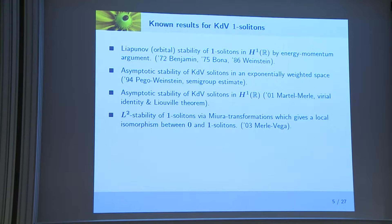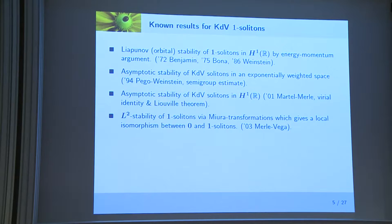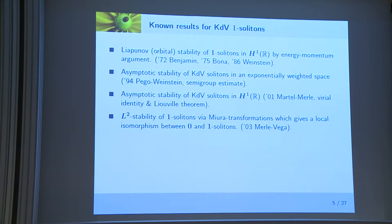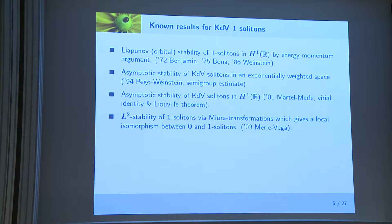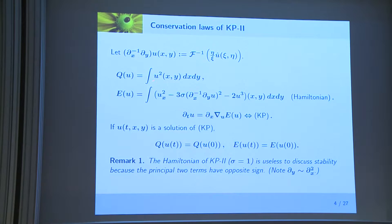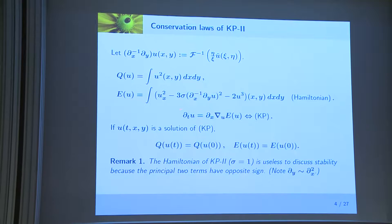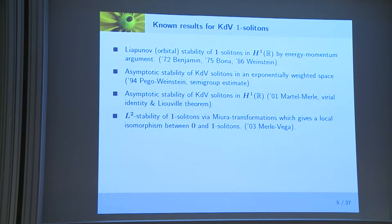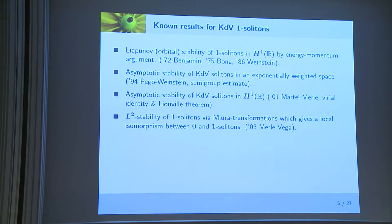Before introducing known results on the KP equation, I would like to recall some famous results on stability of KDV one-solitons. The first is Lyapunov stability of one-solitons in the energy class, using both the L2 conservation law and the Hamiltonian for the KDV equation. Unfortunately, such an argument doesn't work for KP2 because of the bad nature of its Hamiltonian.